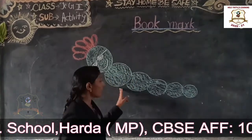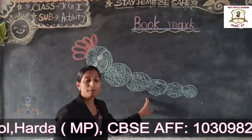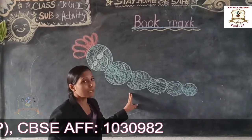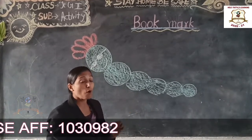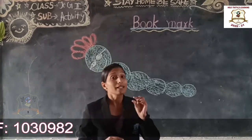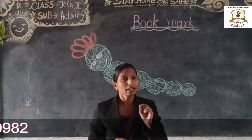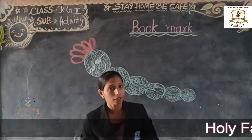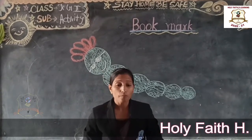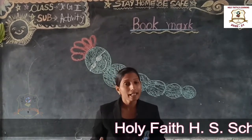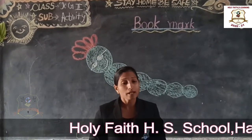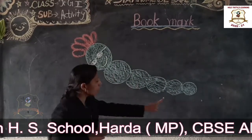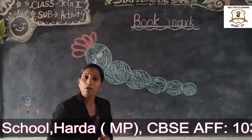It looks like a caterpillar. A worm is like a caterpillar. We will arrange the paper cuttings from biggest to smallest.